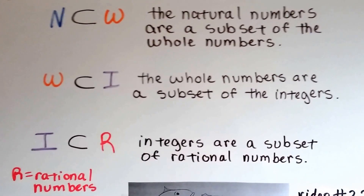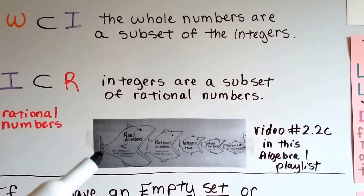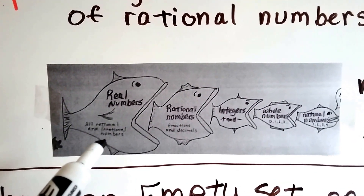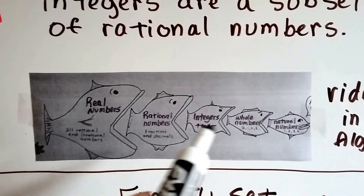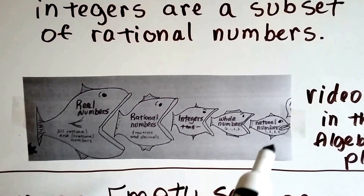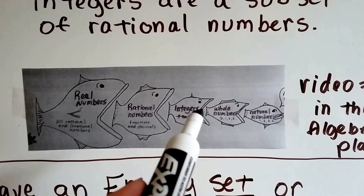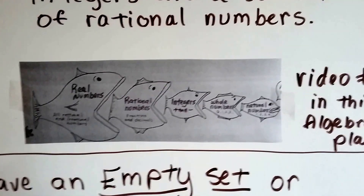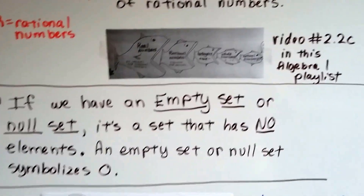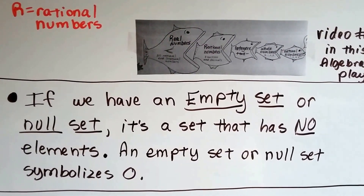If R is the rational numbers, integers are a subset of rational numbers. In video 2.2c of this Algebra 1 playlist, I made a drawing showing how the real numbers — that's all rational and irrational numbers — can include all of these others: rational numbers, irrational numbers, negative and positive integers, whole numbers, and natural numbers. The rational numbers include all of these: integers, whole numbers, and natural numbers. Integers include the whole numbers and natural numbers. The whole numbers include the natural numbers. Each one includes the other. And if we have an empty set or null set, it's a set that has no elements in it.